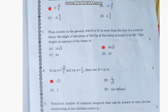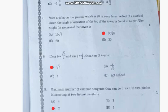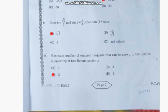Question number 7: From a point on the ground which is 30 meters away from the foot of a vertical tower, the angle of elevation of the top of the tower is found to be 60 degrees. The height in meters of the tower is—the correct answer is option B, 30√3.